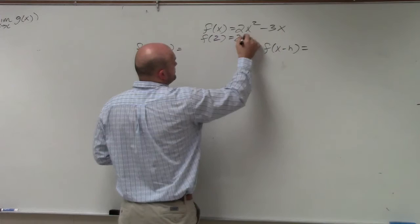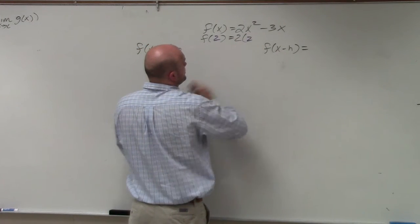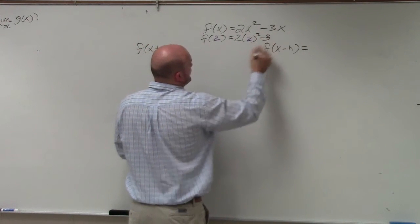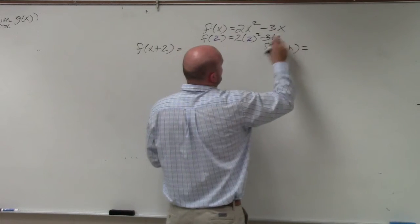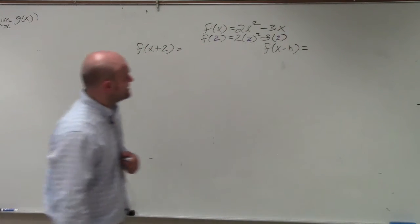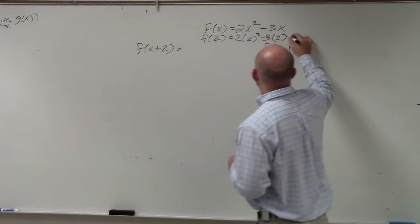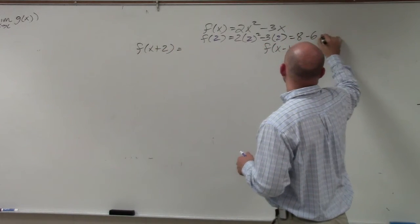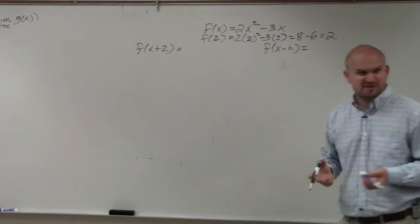So you have 2 times 2 squared minus 3 times 2. 2 squared is 4. 4 times 2 is 8. So therefore, it's 8 minus 6, which equals 2. Everybody feels pretty comfortable with that?